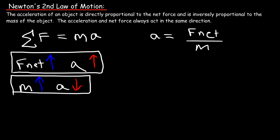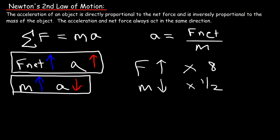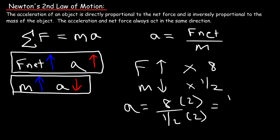If the force increases by a factor of 8 and the mass is reduced to one-half its value, what's the acceleration? It's going to be 8 divided by one-half. If you multiply the top and bottom by 2, this is 16 over 1, so the acceleration will increase by a factor of 16. If you decrease the mass, the acceleration will increase if the net force is constant.